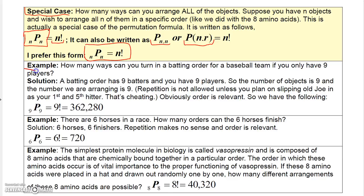Let's look at an example. How many ways can you turn in a batting order for a baseball team if you only have nine players? A baseball team only has nine people batting. The batting order has nine batters, and you have nine players. So you're going to use all nine of the nine players. So basically, n is going to be nine, and r is going to be nine. We call this number r later, but in this case, the two numbers are the same, because we're choosing nine out of nine. We want to know how many nine-player arrangements we can make out of nine players.